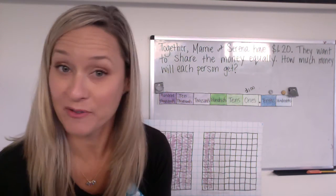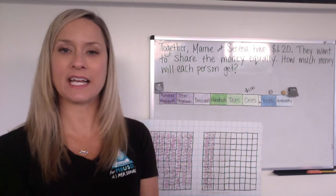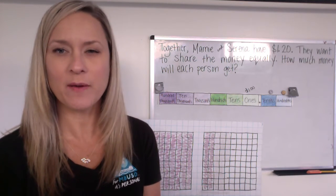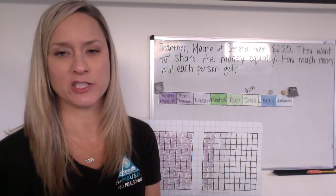Hi kids, it's Mrs. Compton and today we're starting with a story problem. So it says, together Marnie and Serena have $1.20. They want to share the money equally. How much money will each person get?